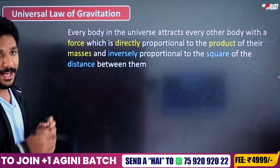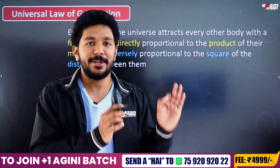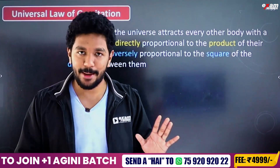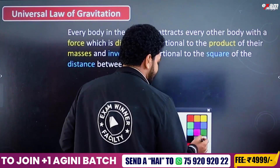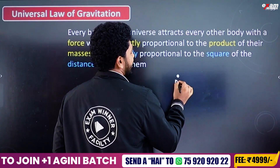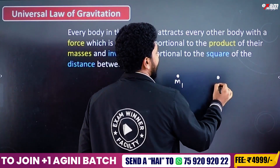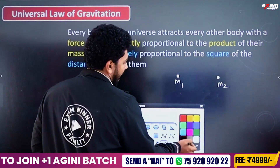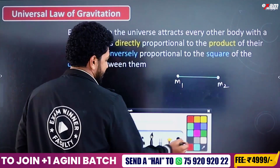The first thing is the Universal Law of Gravitation. Newton's Universal Law of Gravitation. Let's say one mass is M1 and another mass is M2. The distance between them is R.